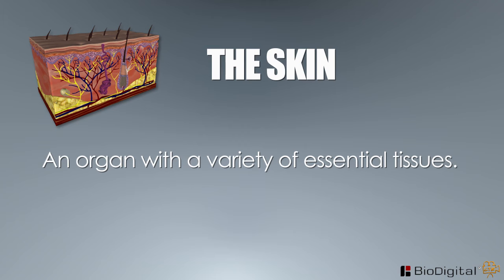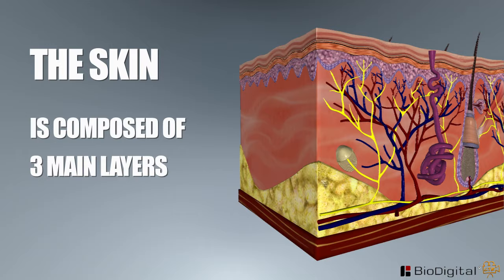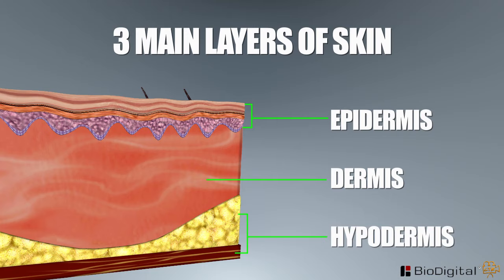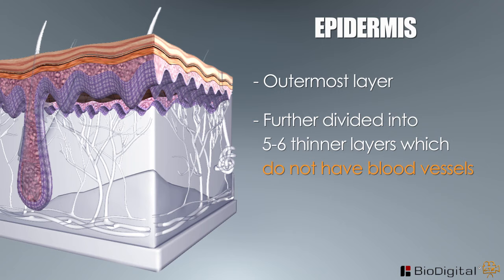The skin is composed of three main layers: epidermis, dermis, and hypodermis. The epidermis is the outermost layer of skin. This layer is further divided into five to six thinner layers which do not have blood vessels. Only two of these layers of the skin will be described.